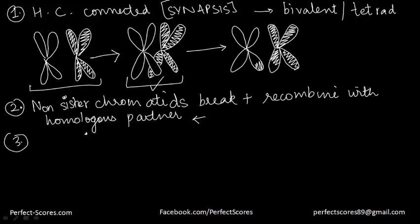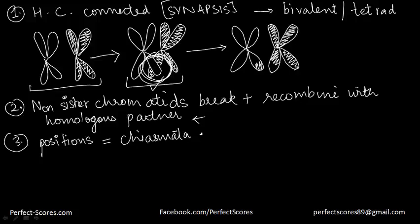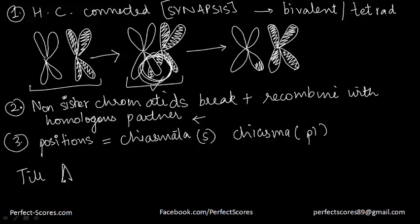The non-sister chromatids remain connected on an X-shaped structure at different positions. The positions at which crossing over takes place are known as chiasmata — chiasma being the singular form. The chiasma hold the homologous chromosomes together as a bivalent, and this continues until anaphase 1, where they need to get separated and move towards the opposite poles.